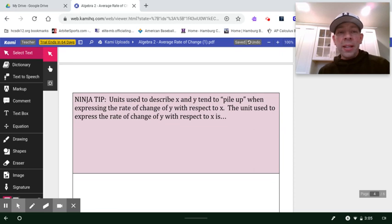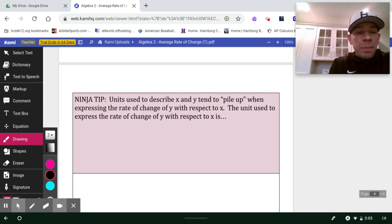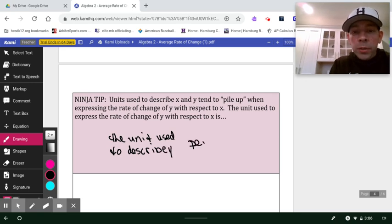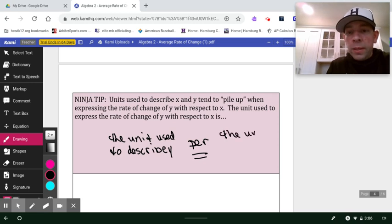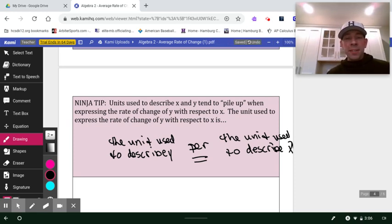Here's a quick little ninja tip that I like that's going to pay off when you get to bigger levels of math. The units, like we saw in the hot air balloon, can tend to pile up and they get a little annoying. Those units are going to be very helpful as you build understanding in more complex problems. And basically those units are always going to be the unit used to describe y per the unit used to describe x. So if you go back to that earlier example, the hot air balloon, we used feet to describe y and we used seconds to describe x. So at the end of the day, it was feet per second.